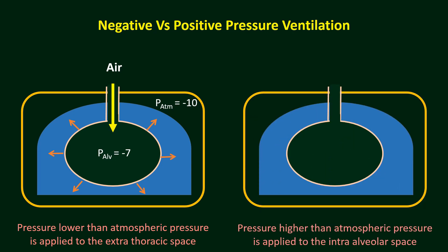In positive pressure ventilation, atmospheric pressure is not changed; the ventilator provides respiration inside the lung with force. So in negative pressure ventilation, pressure lower than atmospheric pressure is applied to the extra-thoracic space. In positive pressure ventilation, pressure higher than atmospheric pressure is applied to the intra-alveolar space.